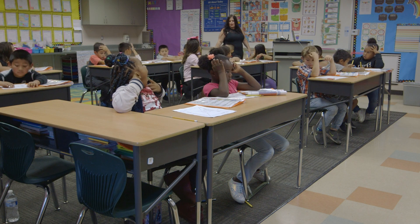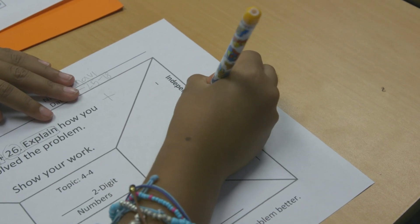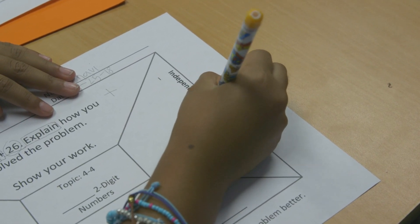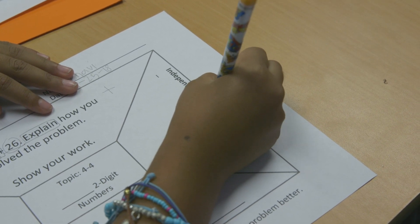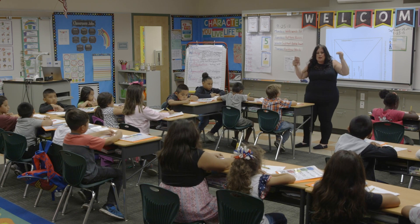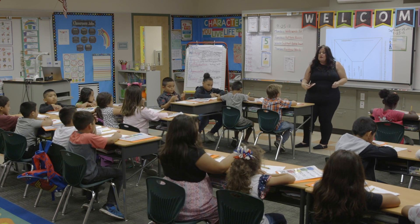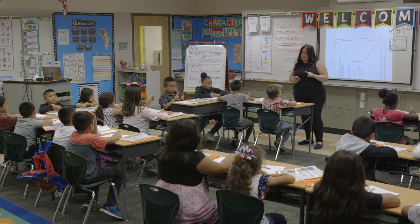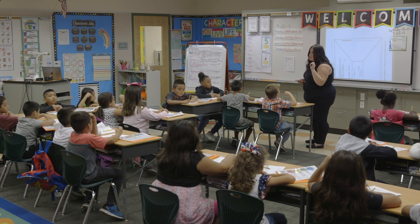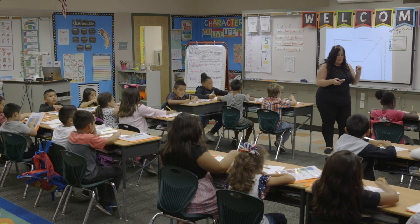Think about your strategy and write what you're going to use — you're not solving yet, just writing your strategy on top. The first step is just getting your minds going, because the real work is going to be when you talk to your partner. I'm going to let you work for two minutes by yourself. Independent is voice level zero. Two minutes to solve this problem — go.